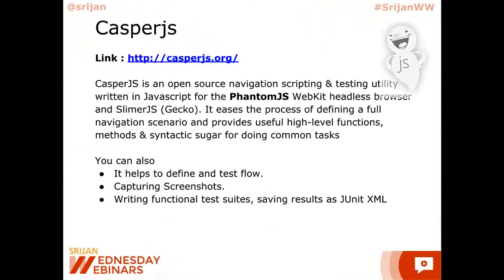CasperJS also helps capture screenshots during the run of a test — so if a test fails, you can capture the state of the page at the time of failure. You can write functional tests and save them as JUnit XML, which means the output can be consumed by JUnit.